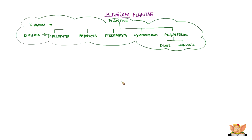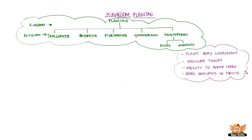These divisions are done based on the differentiation in plant body components, presence of vascular tissues, ability to bear seeds, and whether seeds are enclosed in fruit or not. Vascular tissues are required for food and water transportation within the plant body.